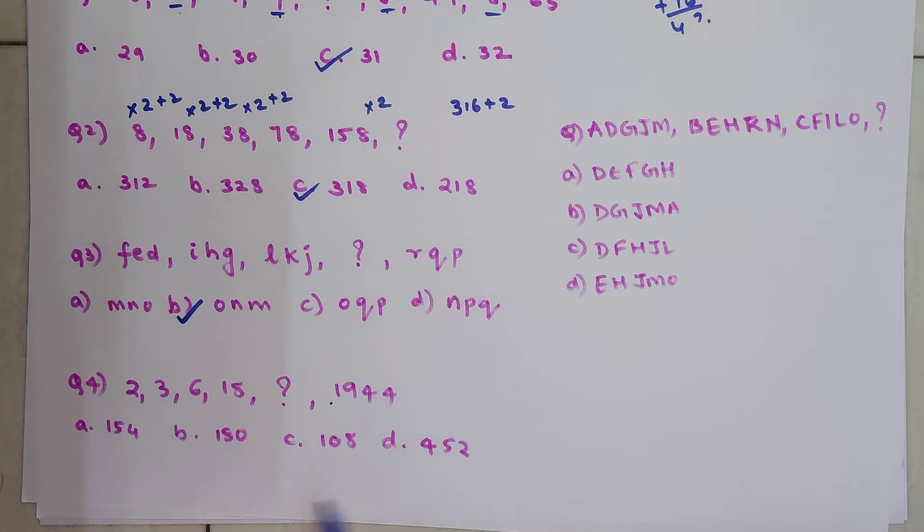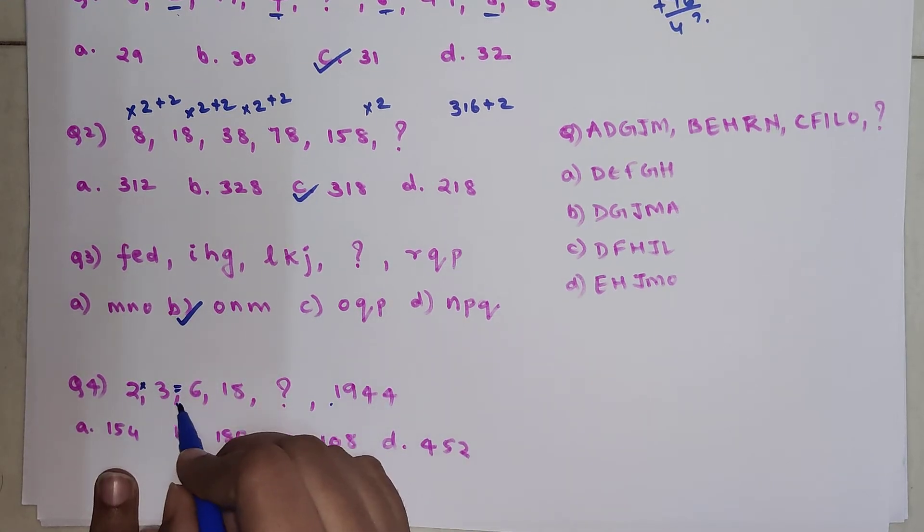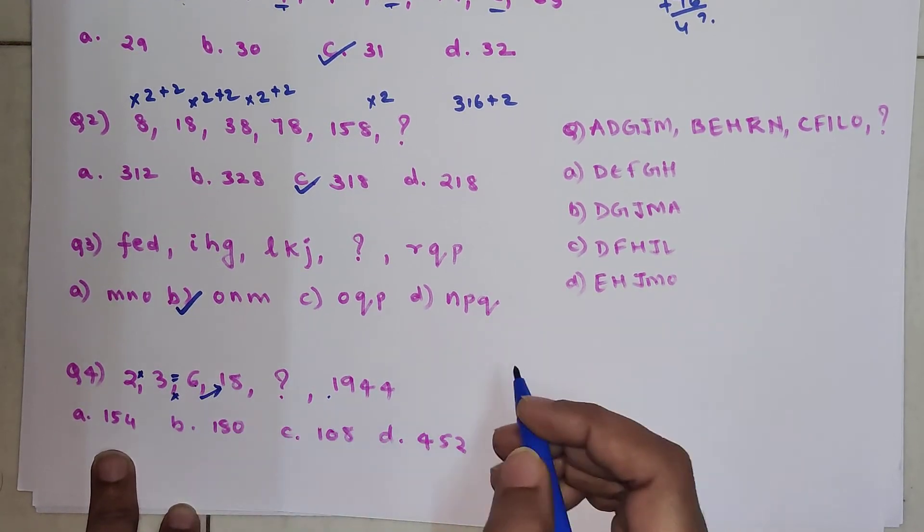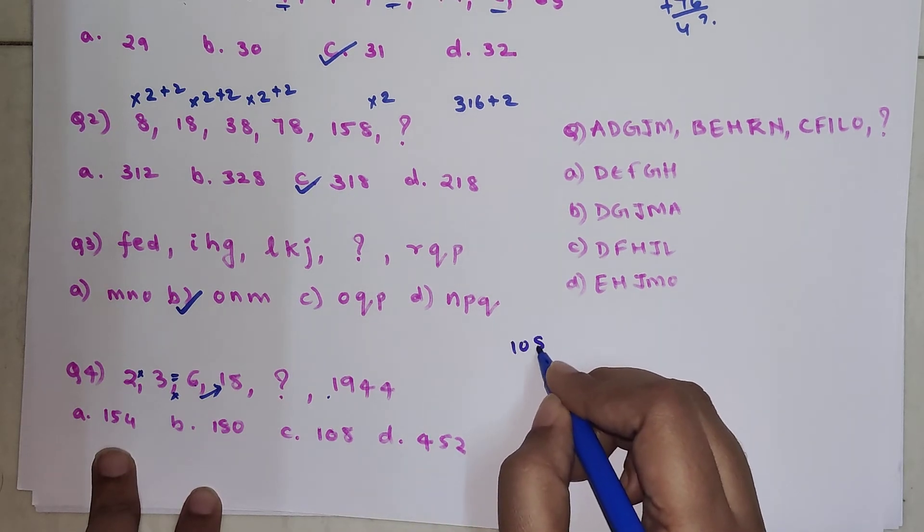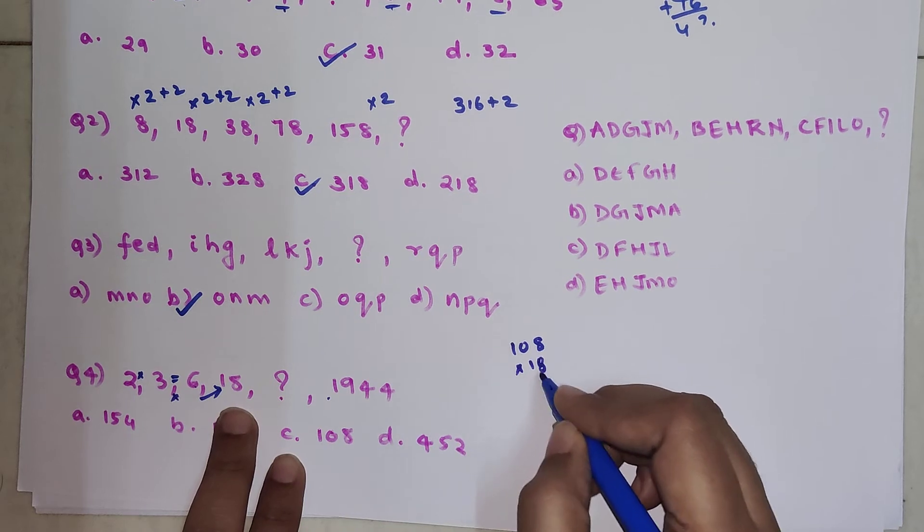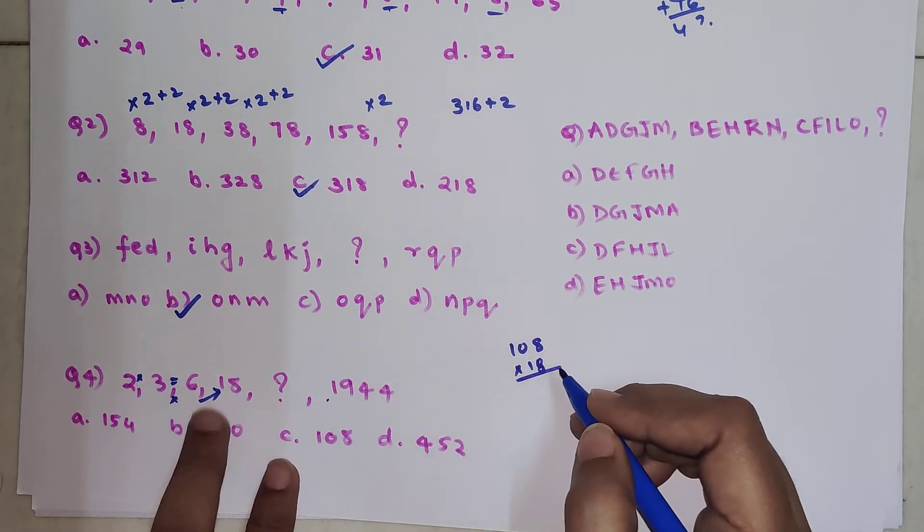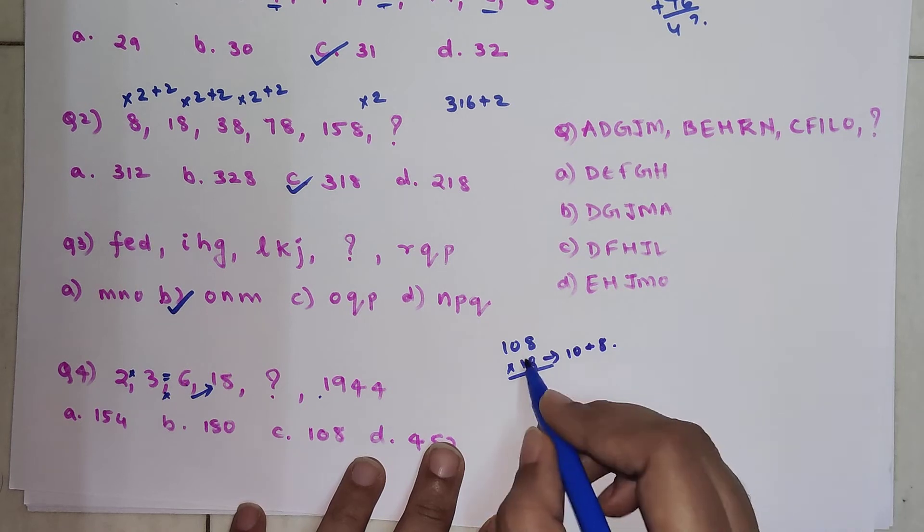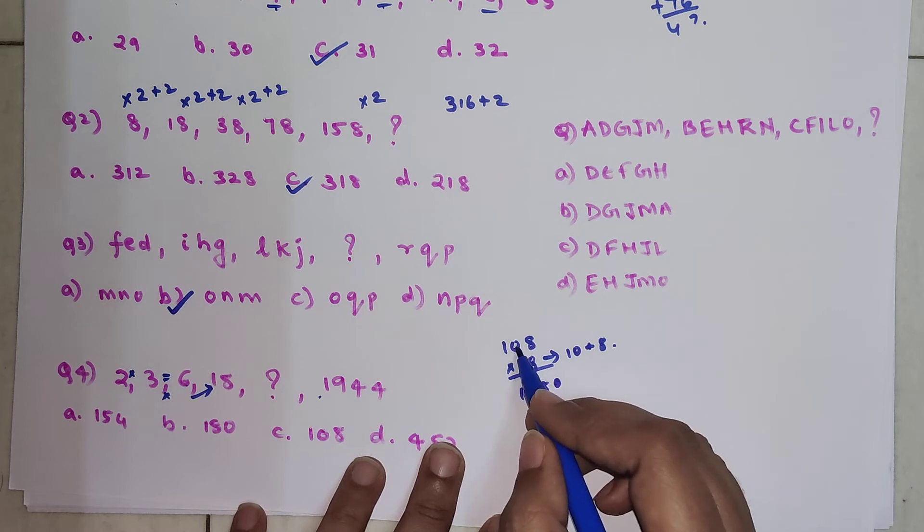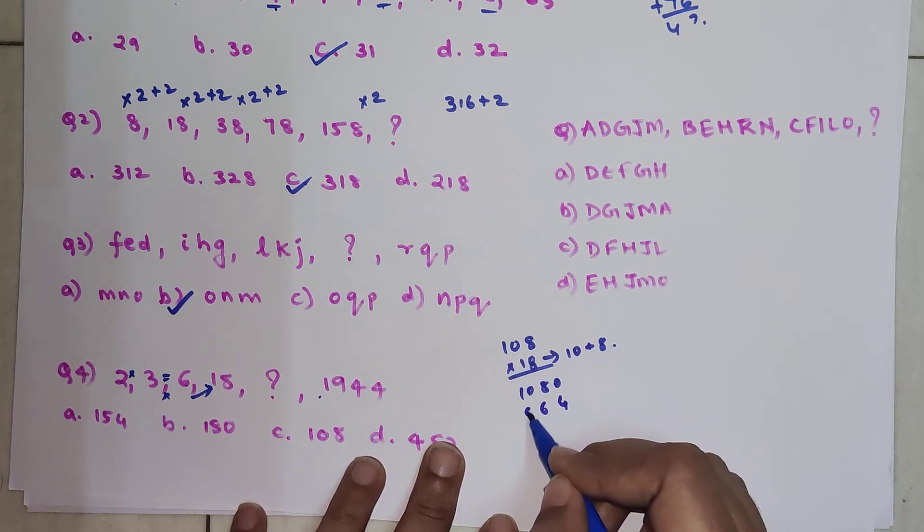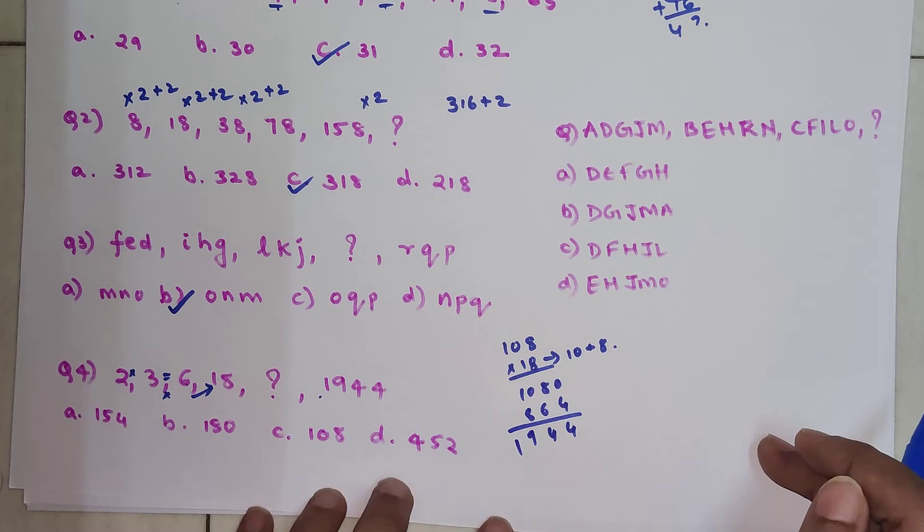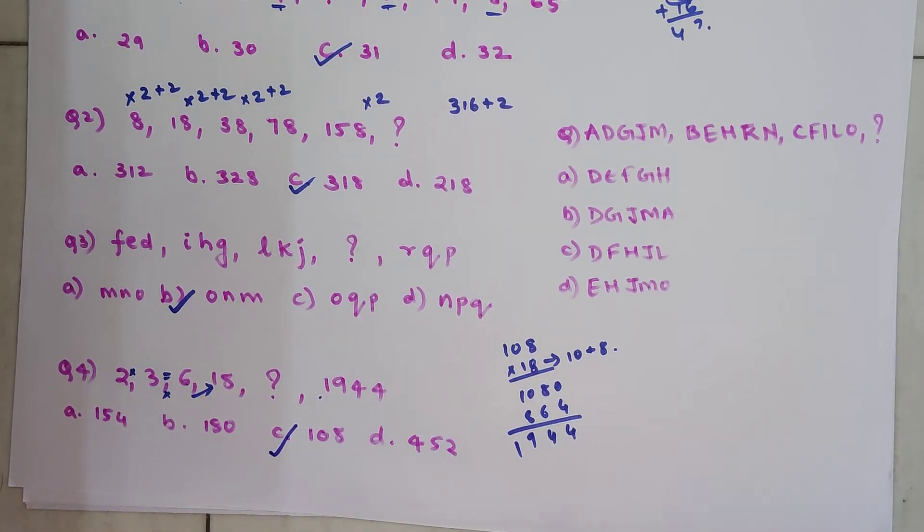The next one: what we have over here is 2 followed by 3, which is 6, then you have 18, then something we need to find out, and then 1944. Very quickly understand, if I multiply these two, I get answer as 6. If I multiply these two, I get 18. Let's see, if I multiply 6 into 18, we get 108. Now, 18 into 108 you should do. I split 18 in terms of 10 and 8. I will multiply 108 by 10, which is 1080, and multiplying 8 with 108, I get 864. So I get 4, 14, carry 1, 9, carry 1, 9, 4, 4, which is my option. In this case, my answer is 108.